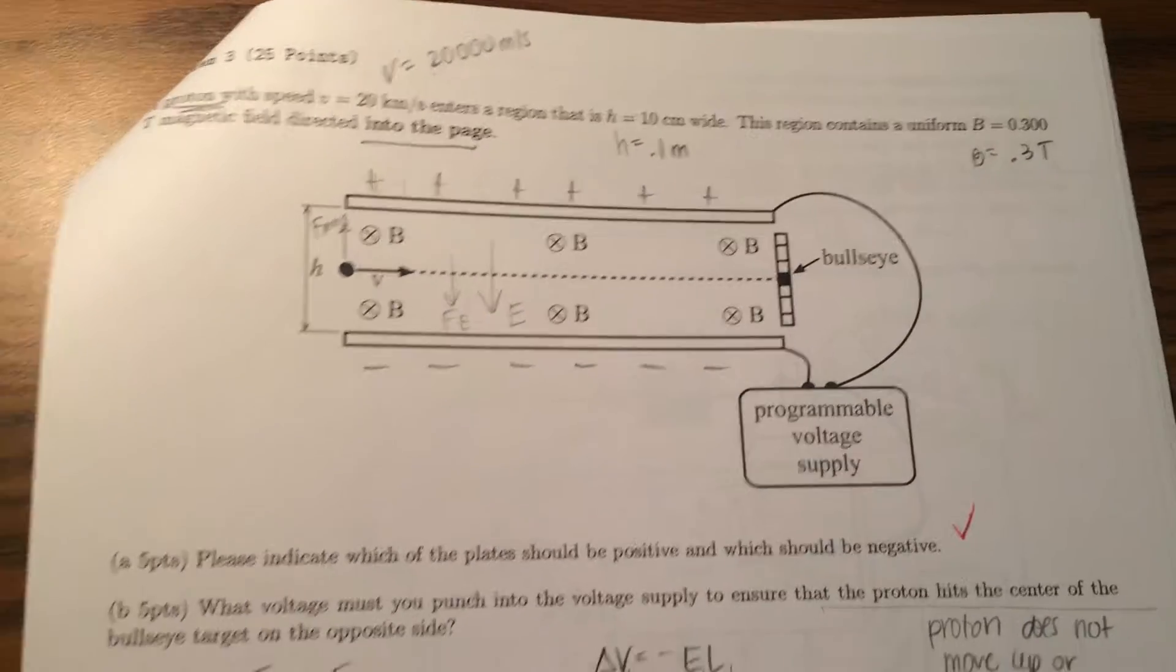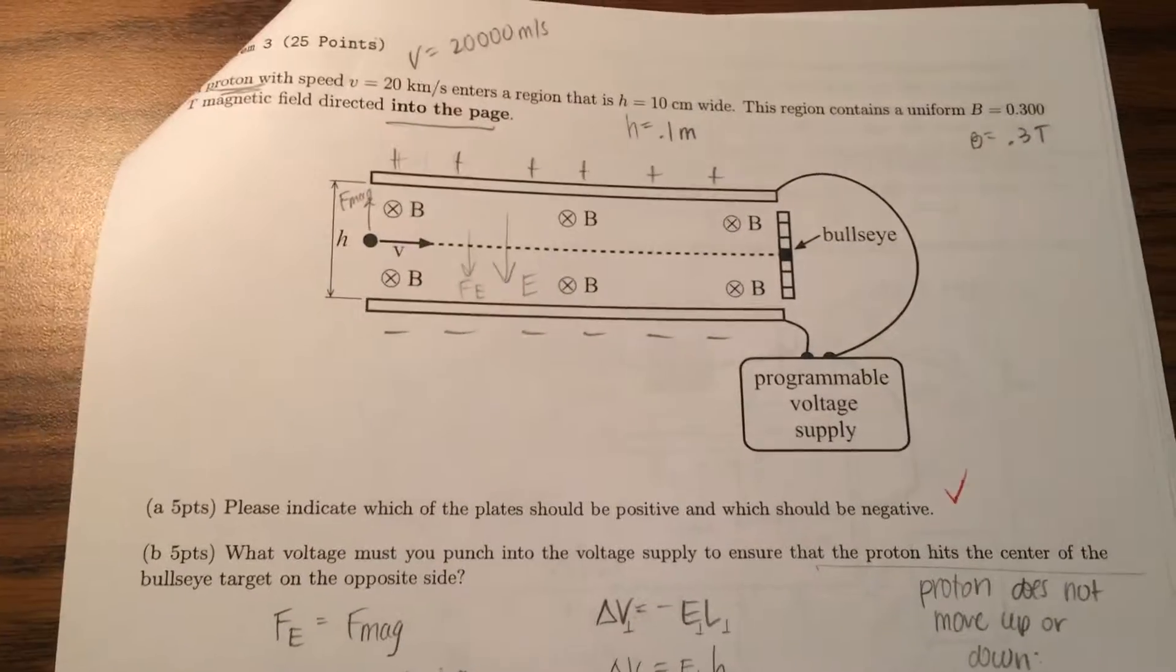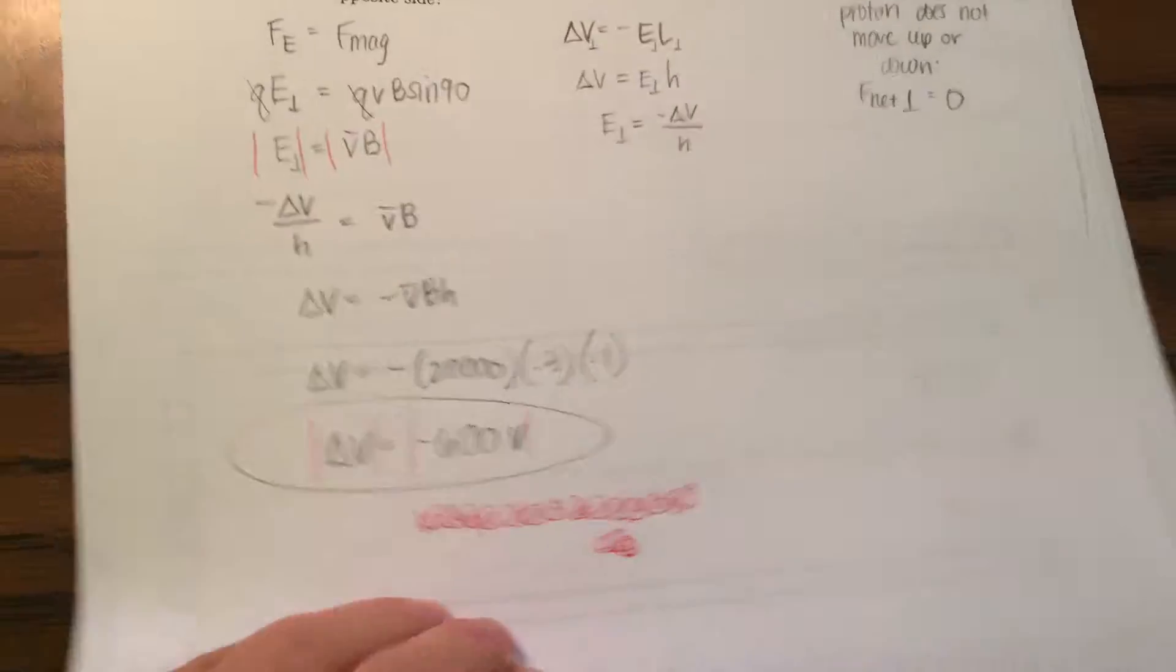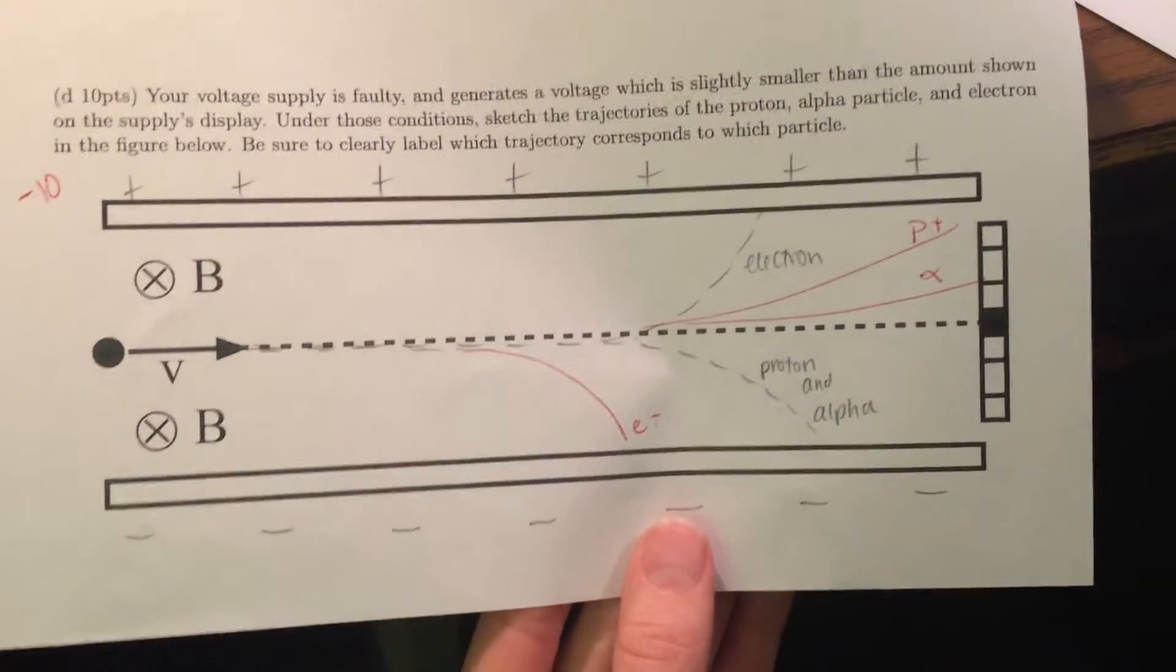So on my last physics test, the only problem that gave me a little bit of trouble was the problem over the Hall effect. And I made some minor errors, but my main error was at the end where I switched the direction of the electron and the proton and the alpha particle.